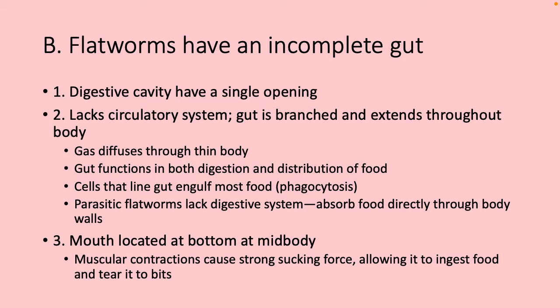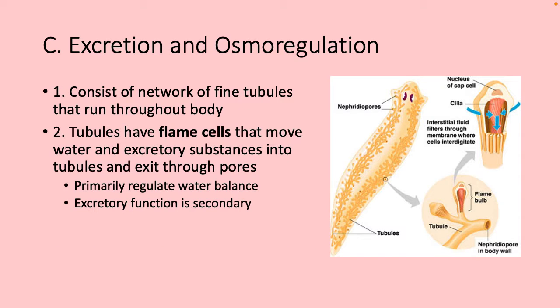The mouth is located at the bottom, at mid-body, and they have very strong muscular contractions that allow them to ingest food and even tear it to bits. Some unique features involved in excretion and osmoregulation — water balance — are flame cells. Flame cells are tubules that run on both sides of the organism where water and excretory substances enter and leave, helping with water balance and waste removal. You only find them in flatworms.